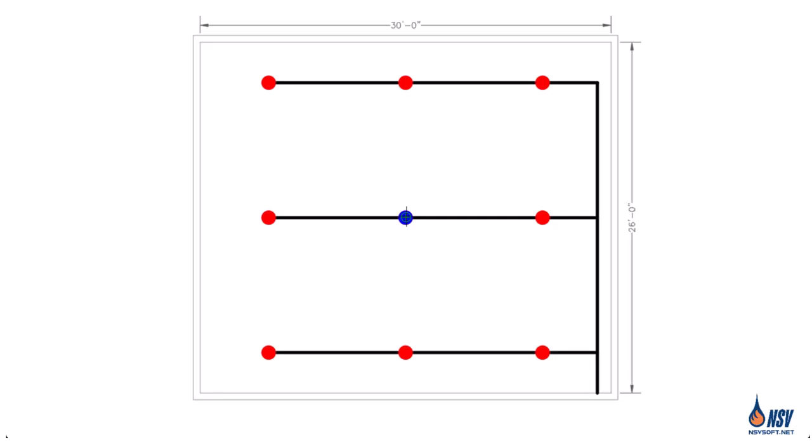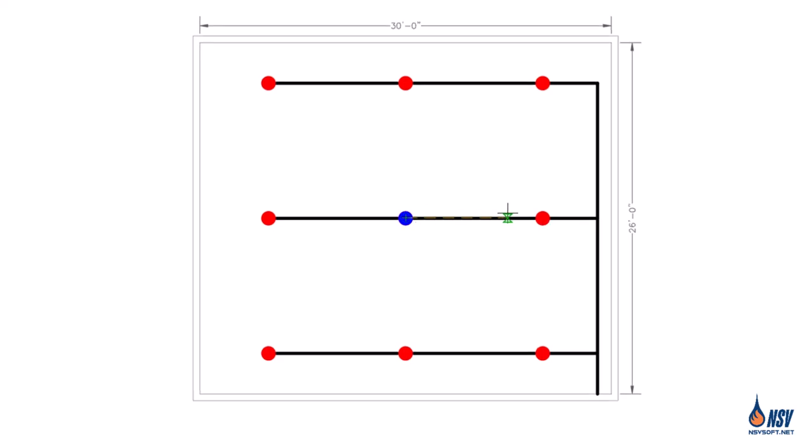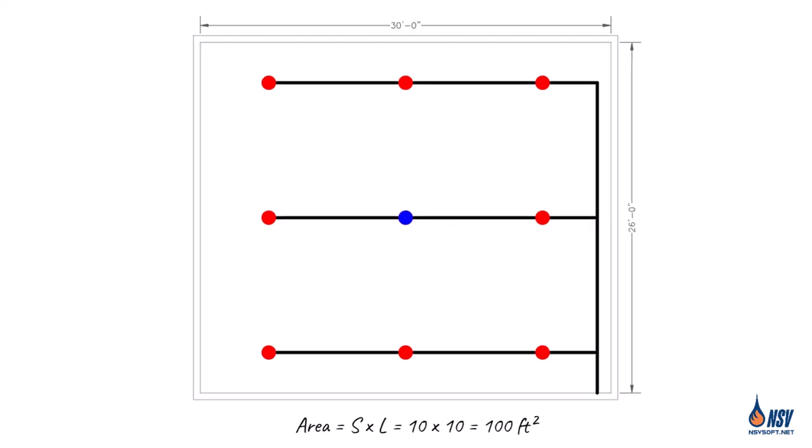In the first example, the sprinklers are uniformly spaced, making it easy to find the coverage area using the S by L method. The distance from the blue sprinkler to the sprinklers on either side, left and right, along the branch line is 10 feet. Similarly, the distance for the L, which is the distance to the sprinklers above and below, is also 10 feet. Therefore, using the S by L method, the coverage area of the blue sprinkler is 10 times 10, which equals 100 square feet.